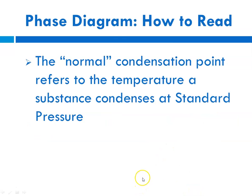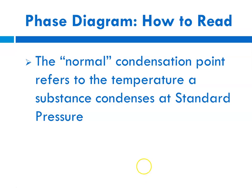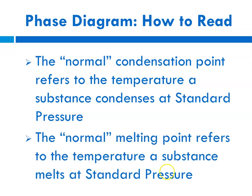So again, the normal condensation point refers to that temperature a substance condenses under standard pressure conditions. And the normal melting point refers to the temperature where a substance goes from solid to liquid at standard pressure.